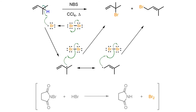N-bromosuccinimide, or NBS, is a readily handled solid that reacts with HBr to produce molecular bromine. These bromine molecules will break apart at high temperatures to give bromine radicals, which will then abstract the hydrogen from the organic substrate. The abstraction is regio-selective since the outcome is a stabilized allylic radical. In the last step, the allylic radical reacts with bromine at either end of the allylic system to give two regio-isomeric alkyl halide products.